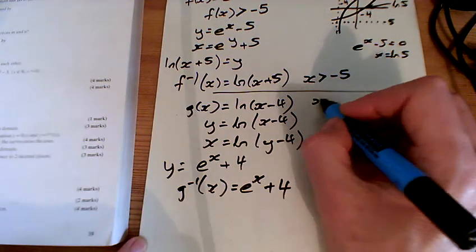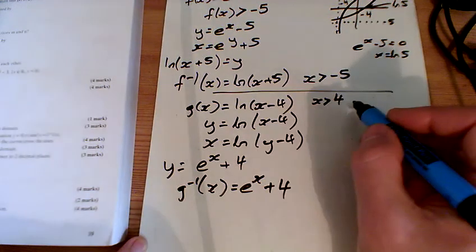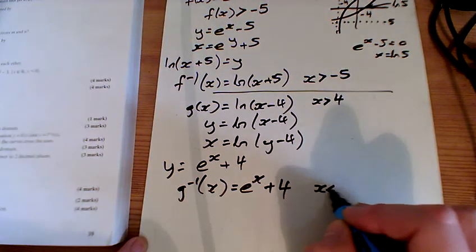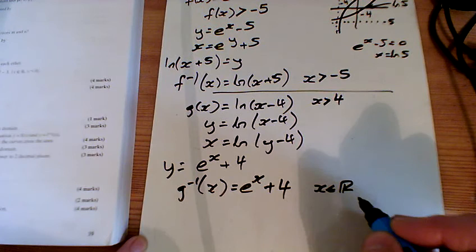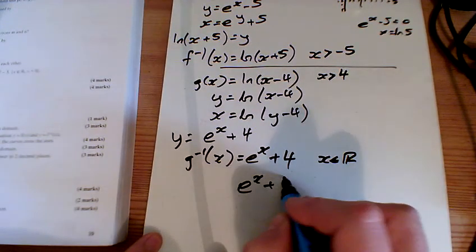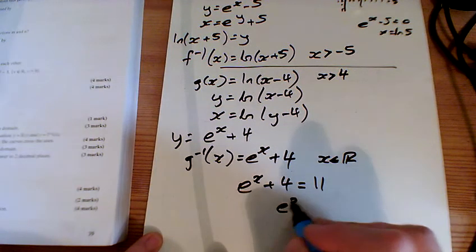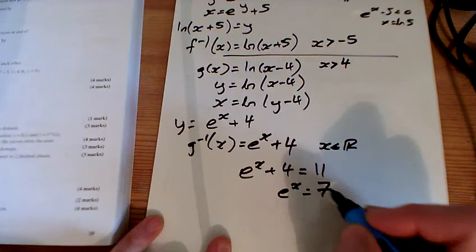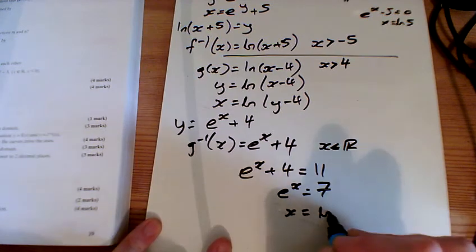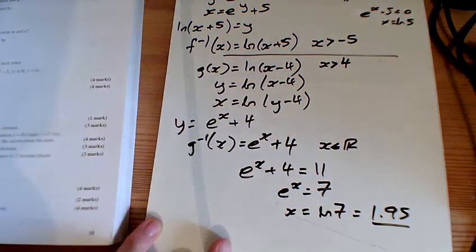Domain of that one is x is greater than 4, but that gives any number, still can have any number there. So that would be all real numbers coming out of that. And the last one says, when does that equal 11? So I'm going to take away the 4 to give 7, and x is LN 7. Tap that into the calculator and you get 1.95.